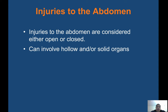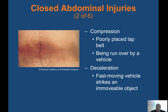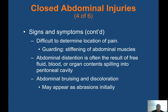Injuries to the abdomen are considered either open or closed, and can involve hollow and/or solid organs. Closed abdominal injuries involve blunt trauma to the abdomen without breaking the skin. Mechanisms of injury include steering wheel, bicycle handlebars, motorcycle collisions, falls, compression from a poorly laced lap belt or seatbelt, being run over by a vehicle, and deceleration when a fast-moving vehicle strikes an immovable object. Signs and symptoms: pain can be deceiving, often diffuse in nature, and may be referred to another body location. Blood in the peritoneal cavity produces acute pain in the entire abdomen. Guarding — stiffening of the abdominal muscles — is common. Abdominal distension is often the result of free fluid or blood or organ contents spilling into the peritoneal cavity. Abdominal bruising and discoloration may appear as abrasions initially.